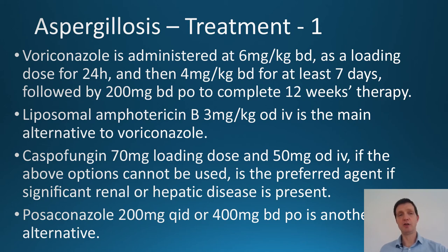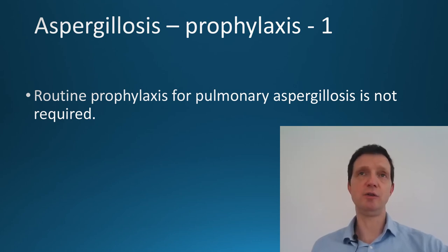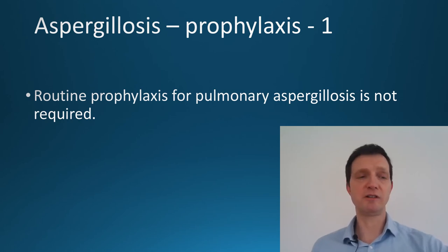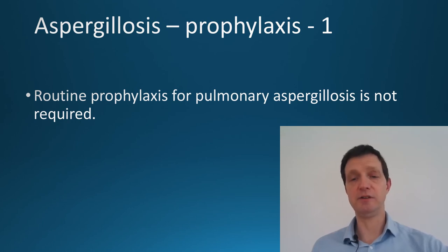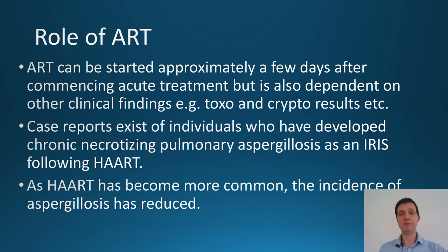Voriconazole should be the first line. Is there any prophylaxis needed for aspergillosis? None at all. Individuals who are HIV positive with a low CD4 count will be on cotrimoxazole, but cotrimoxazole is not very effective against aspergillosis. Regarding antiretroviral therapy: if you have HIV and a low CD4 count, you need antiretroviral therapy — it's as simple as that. No matter how well you can get rid of aspergillosis, without highly active antiretroviral therapy it's only a matter of time before it comes back.